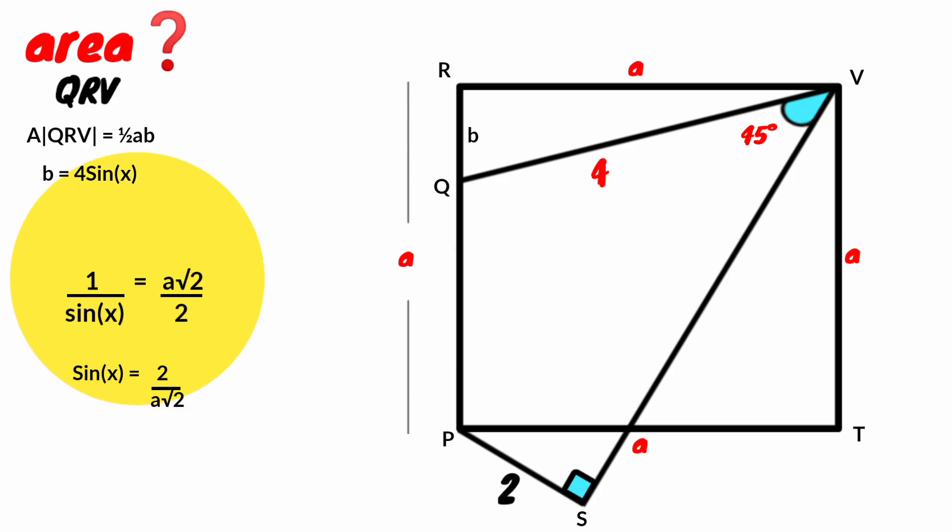If we take the reciprocal of both sides, it is 1 over sin X equal to A root 2 over 2. Multiply both sides of the equation by root 2.